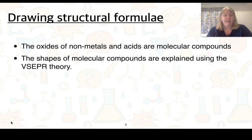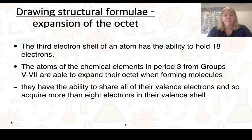We're looking at oxides of non-metals and acids, and both of these are molecular compounds. The shapes of compounds are explained using the VSEPR theory. This is nothing new, we've used this previously this year. What is new though, is that we're looking in some of these cases as an expansion of the octet. The third electron shell, if we have a think about that, has the ability to hold 18 electrons, but we usually find that they only hold 8. In this case here, the atoms of the chemical elements in period 3, from groups 5 to 7, are able to expand their octet when forming molecules. And they have the ability to share all of the valence electrons and so acquire more than 8 electrons in the valence shell, and you'll see that in a moment.